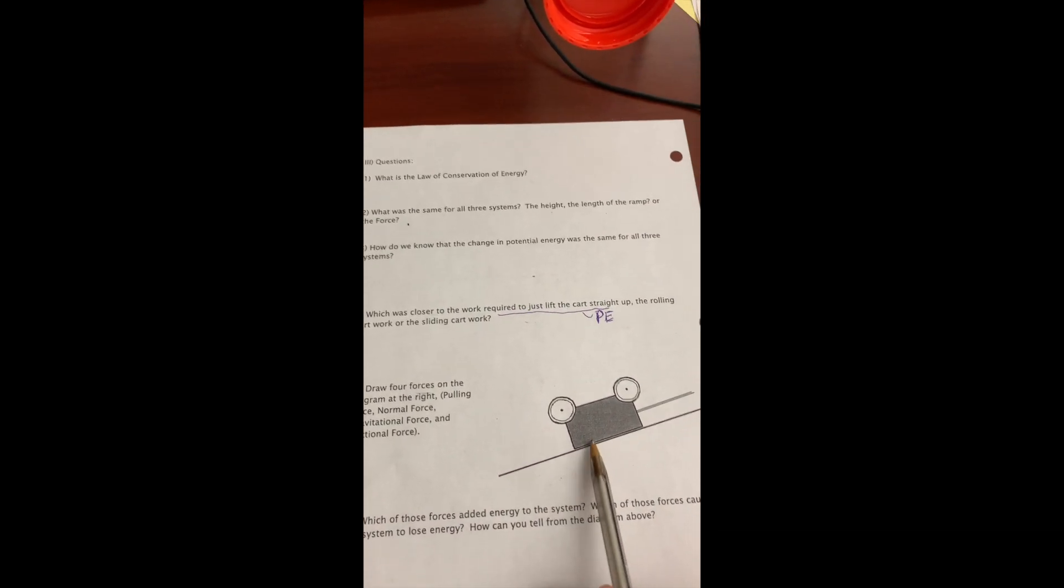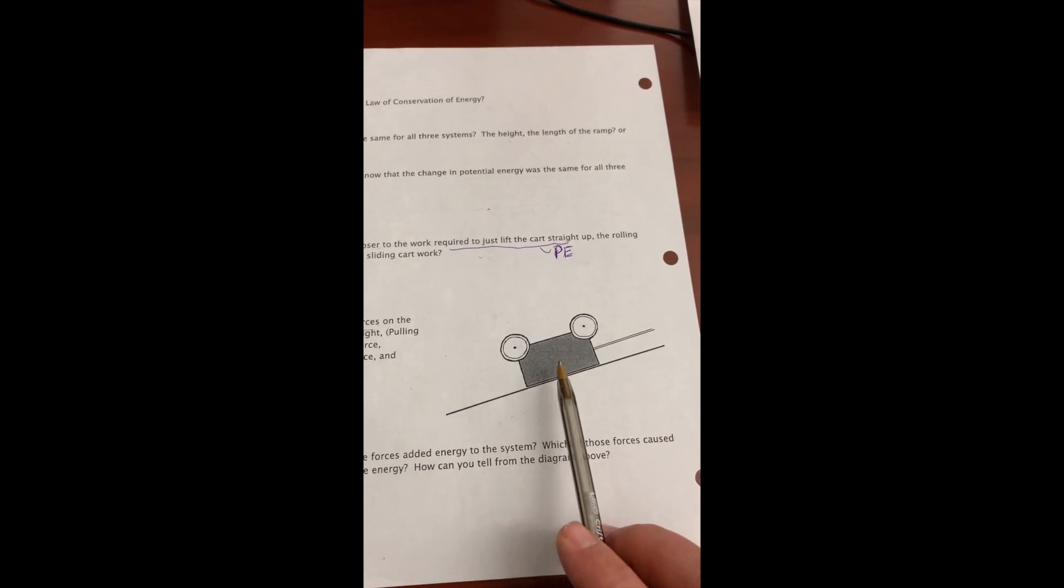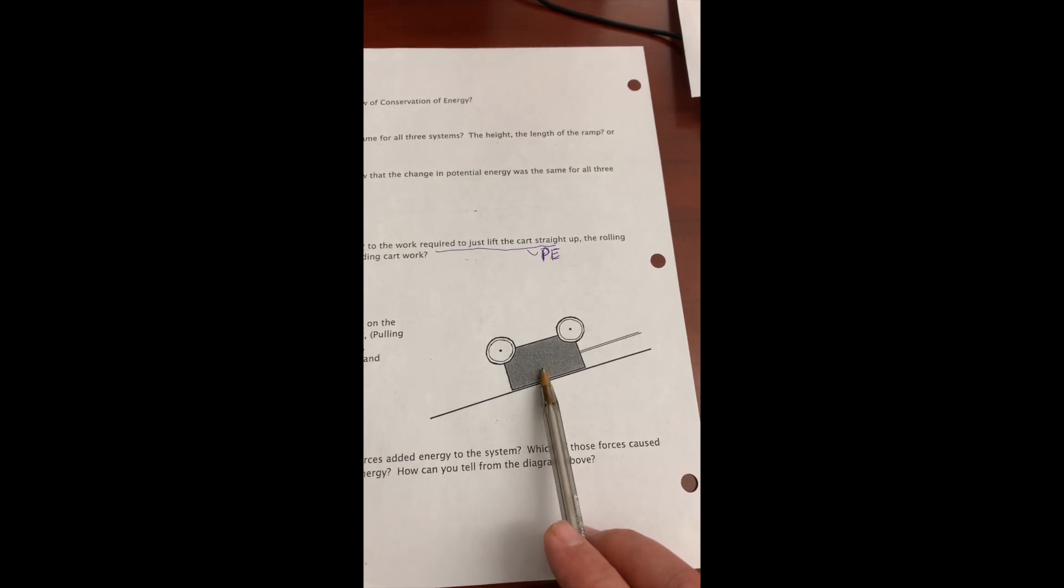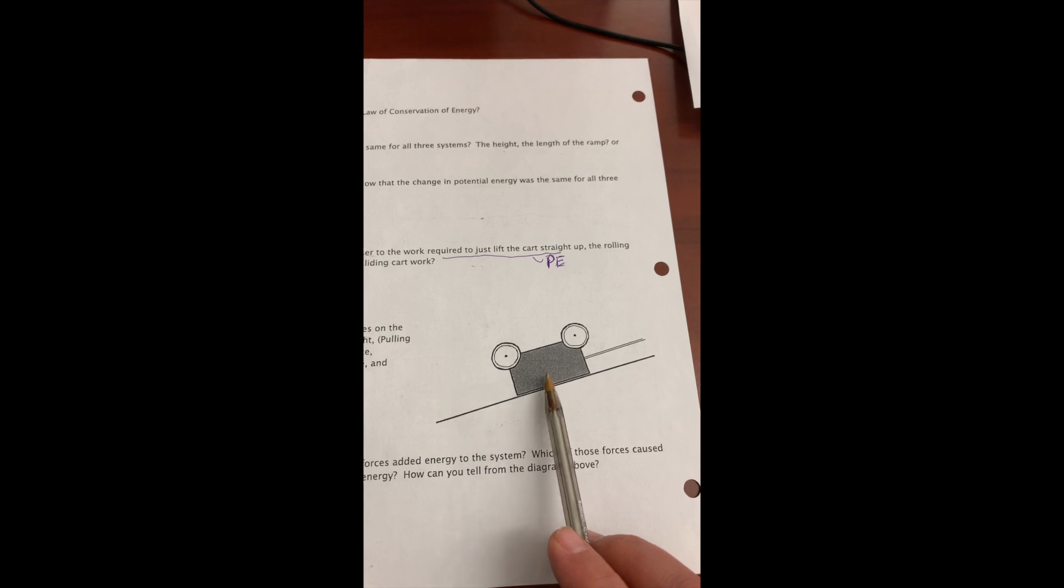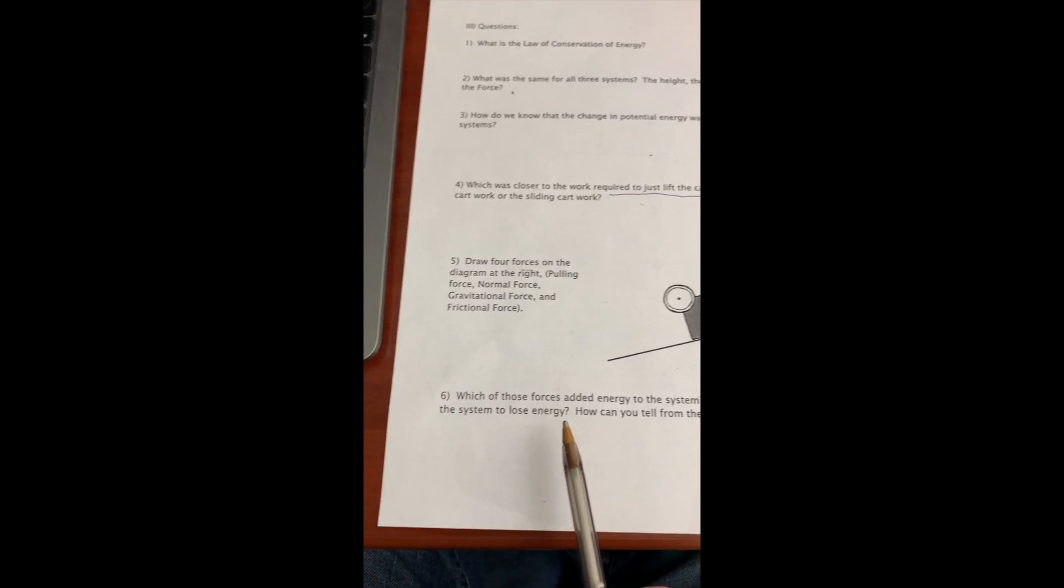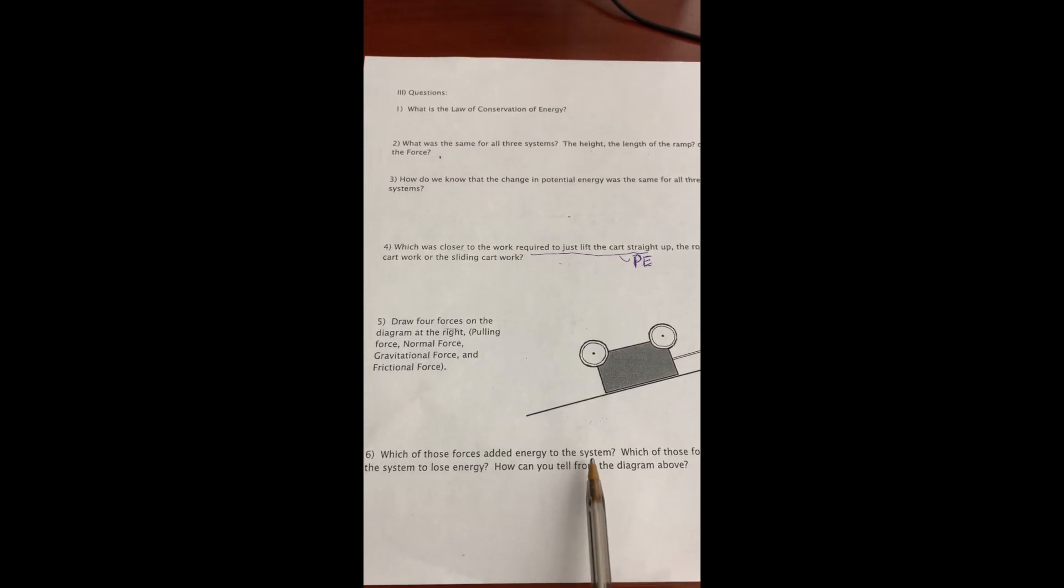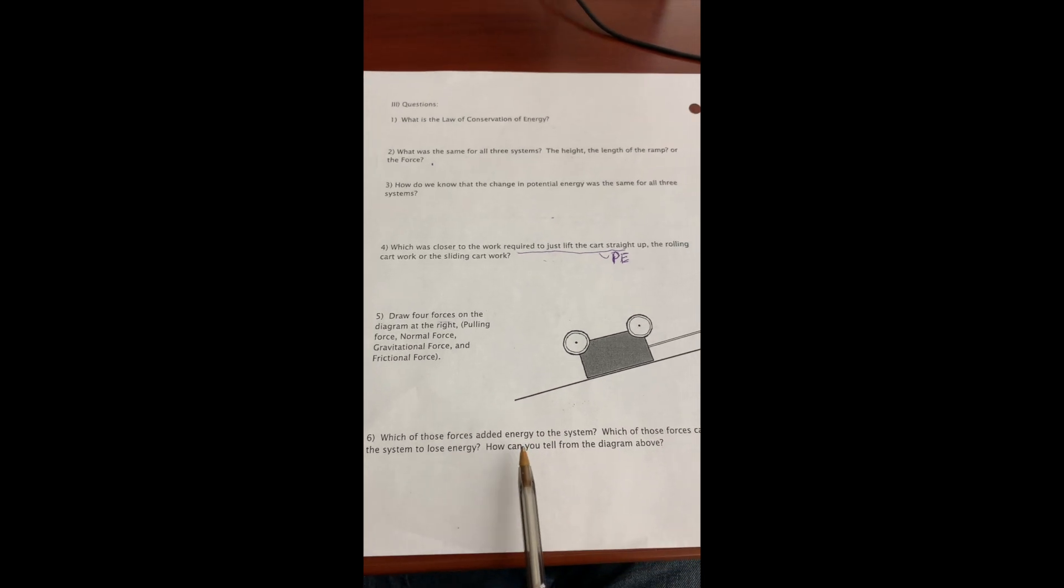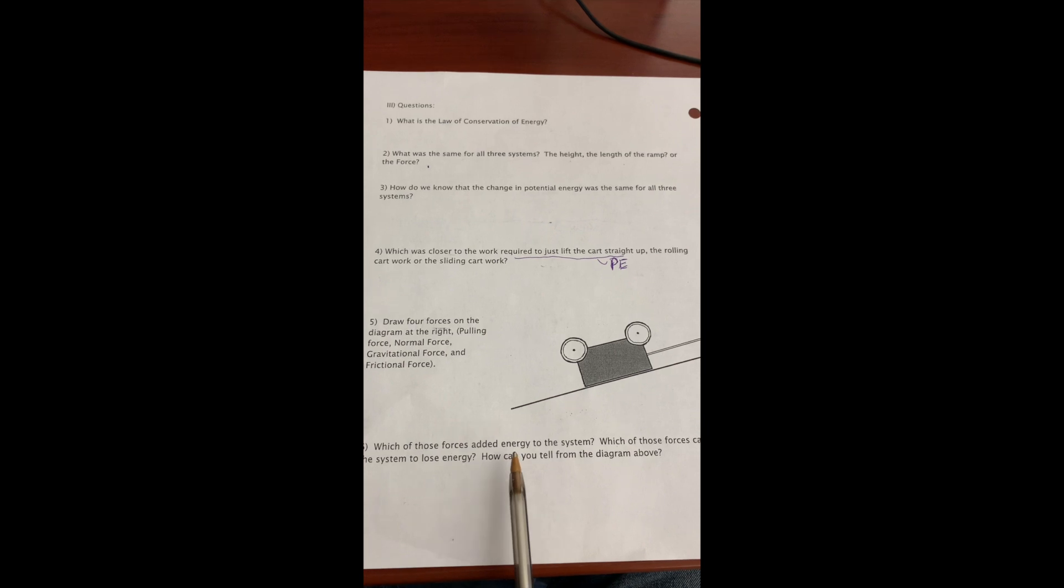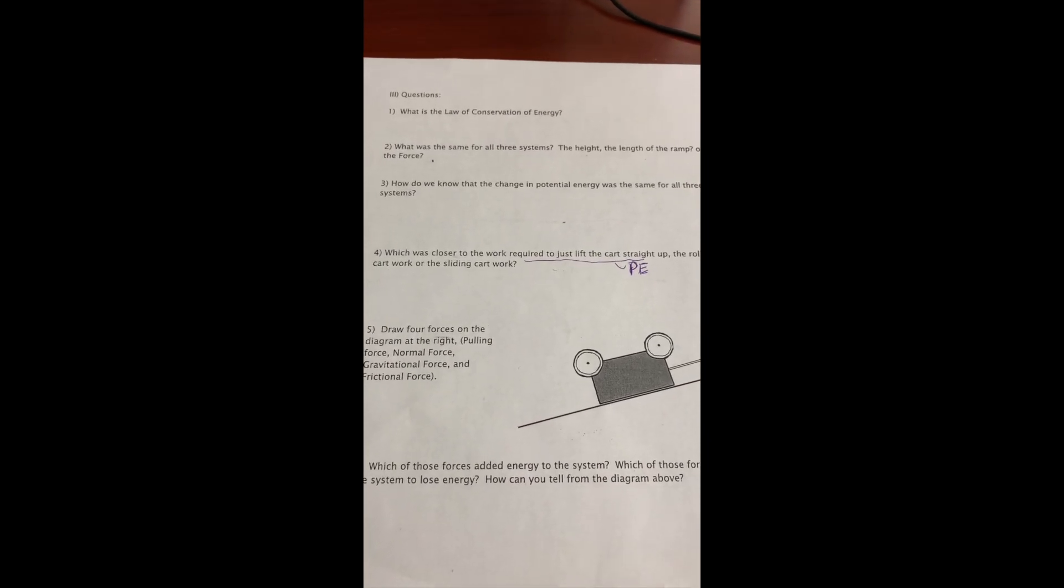And then here we're going to draw forces, and this is basically a free body diagram. And so I'm asking you to go back to our last unit and think, what arrows should I draw on this cart? How many forces do you think we should draw? Lastly, which of these forces added energy to the system? Remember, the energy of the system should be constant unless something from the outside does work on it. And so the question is, what force is actually doing work on our system? Hopefully that will help when you do the write-up.